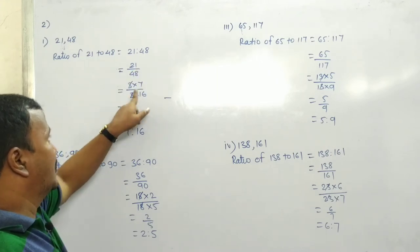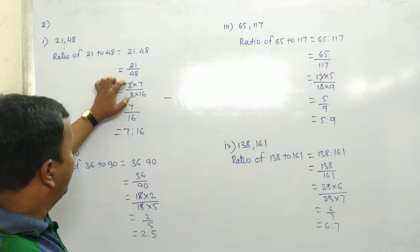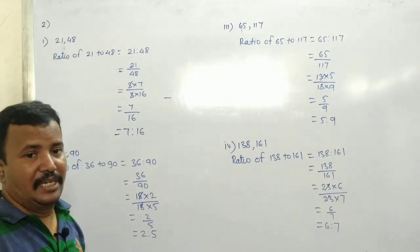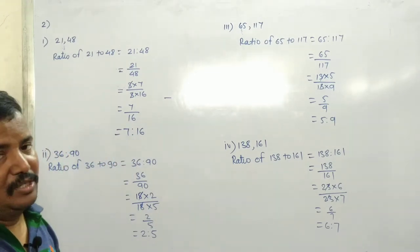3 times 7 is 21 and 3 times 16 is 48. 3, 3 cancel. Answer is 7 upon 16. This is 7 ratio 16. What is 7 ratio of 16?